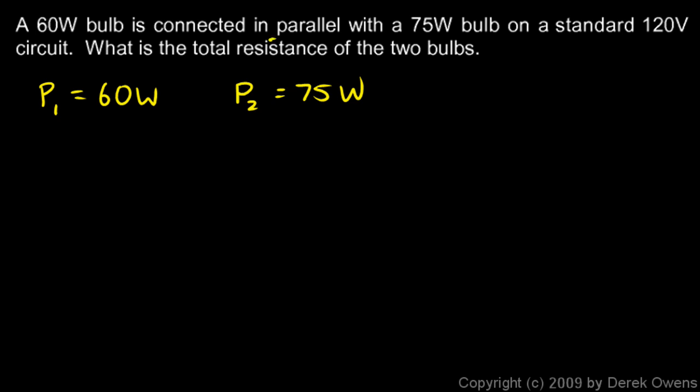But we know they're in parallel, so we know the voltage in each one has to be the same, and we also know that that voltage will be 120 volts. So V1 is 120 volts and V2 is 120 volts. And we have a formula that relates the power and the voltage and the resistance. Power is voltage squared over R. And if we rearrange that algebraically, we can say that R is V squared over P.